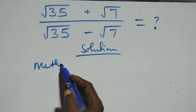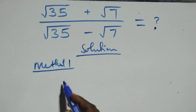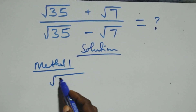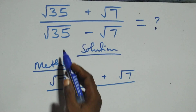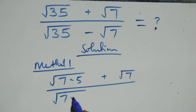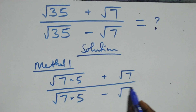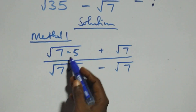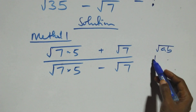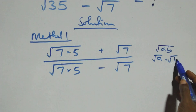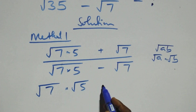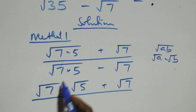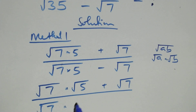The first method here. From what we have, we can rewrite this: root 35 can be written as root 7 times 5, plus root 7 here. Then over, we also have root 7 times 5 minus root 7 here. The next step: this follows when we have root A times B, which you can rewrite as root A times root B. And also here, all we have becomes root 7 times root 5 plus root 7, divided by root 7 times root 5 minus root 7.